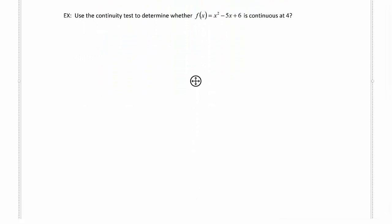Let's use the continuity test to determine whether f of x equals x squared minus 5x plus 6 is continuous at 4. Now we should know the answer right away just by looking at this. Our function f of x is a polynomial, and we know that all polynomials are continuous. So again, we already know the answer is yes.